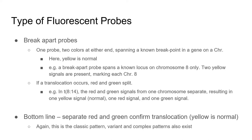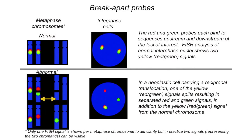Break-apart probes are useful if only one translocation breakpoint is known. They can only tell you that a translocation occurred — they do not identify the translocation partner. These probes are designed with two colors flanking the breakpoint sequence, red and green. For break-apart probes, normal is having the red and green signal in close proximity — a yellow signal. If a translocation occurs, the red and green signals separate, resulting in two new signals. Complex patterns can emerge for both dual fusion and break-apart probes, but the basics have been laid out here.